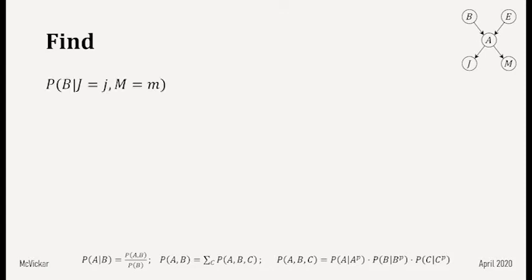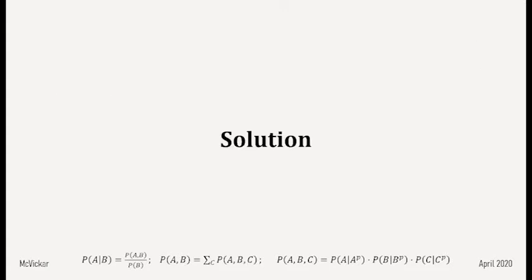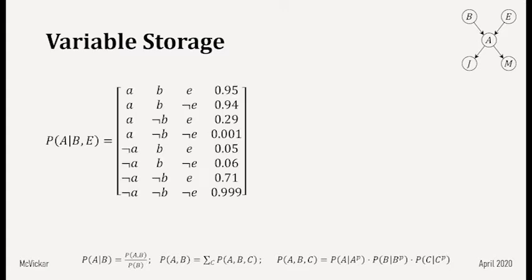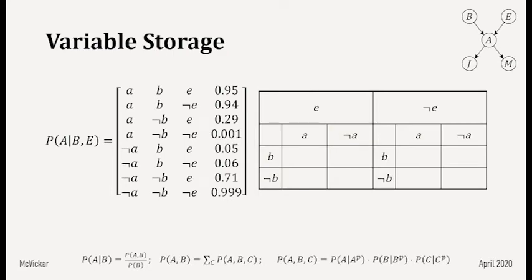We want to find the probability of B given that J is true and M is true. For storing variables, we decided it's best to store each distribution as an n-dimensional matrix where n is the number of variables involved. So for P(A|B,E), there are three variables — the first dimension is A, the second is B, and the third is E — and we fill in the values.